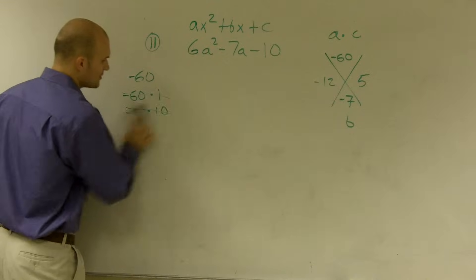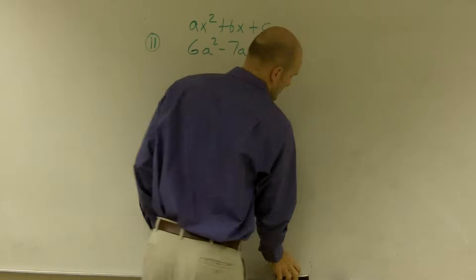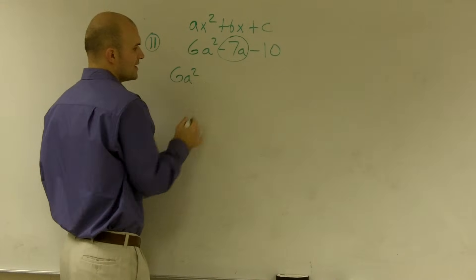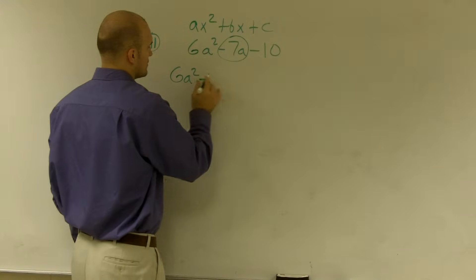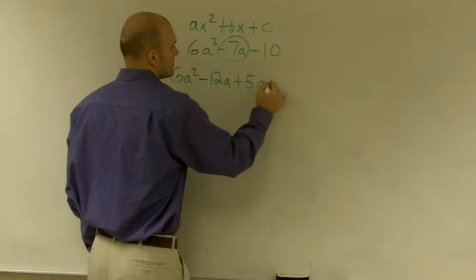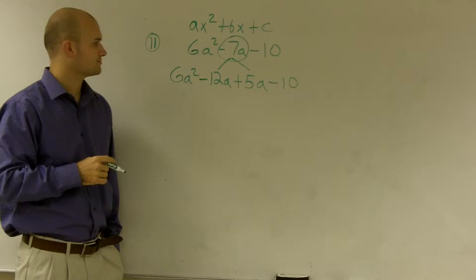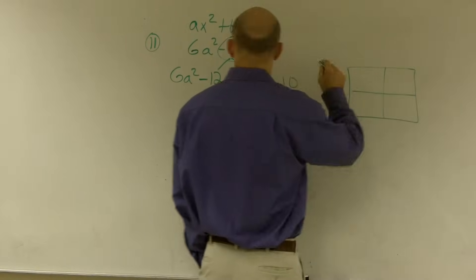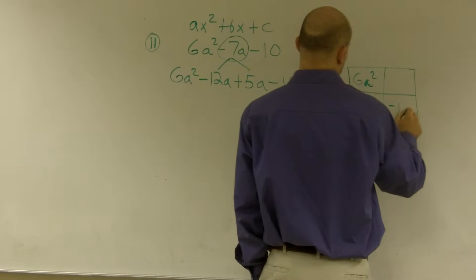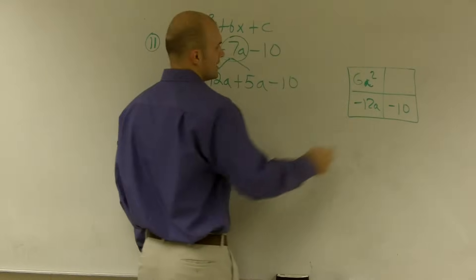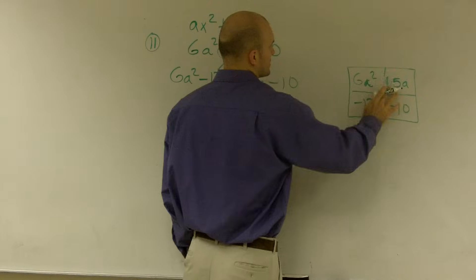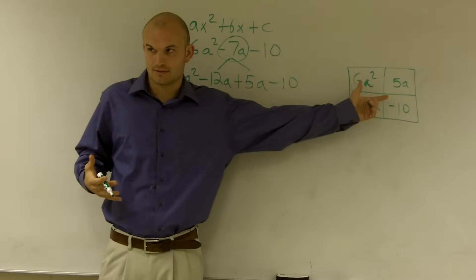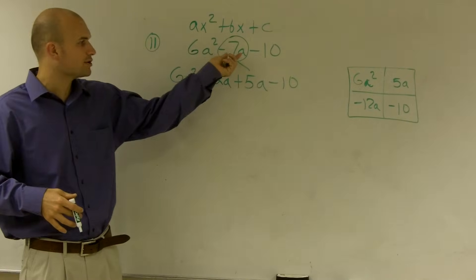So there are a couple of ways we can do this — I'll do it two different ways, and you can determine which way makes sense. One way is we can rewrite this formula with a negative 12a plus 5a minus 10. So instead of writing negative 7a, we could write it like that. The other way is what we call the box method. You're really doing essentially the same thing — this is just a way to organize it differently.